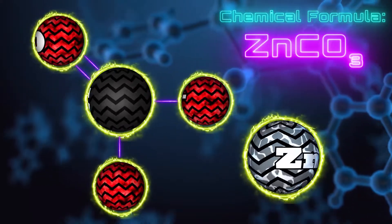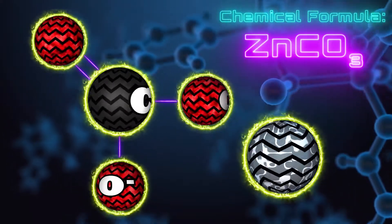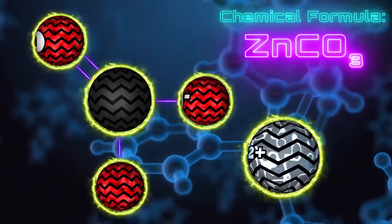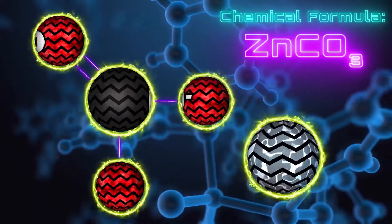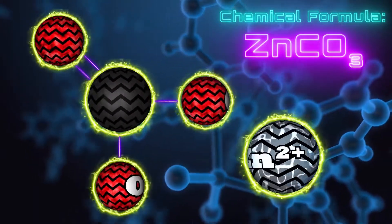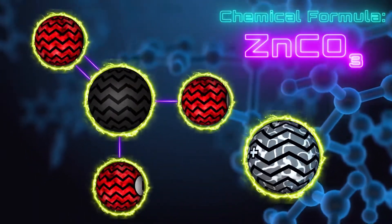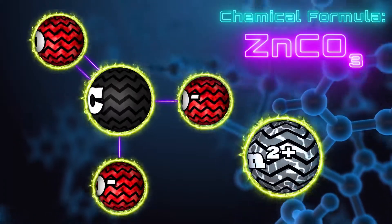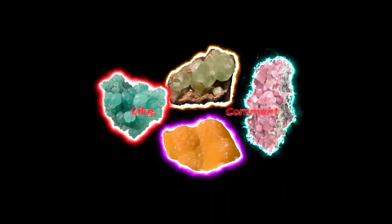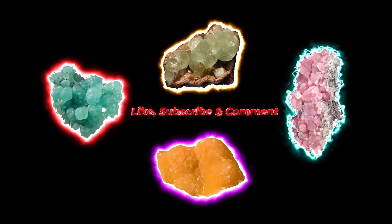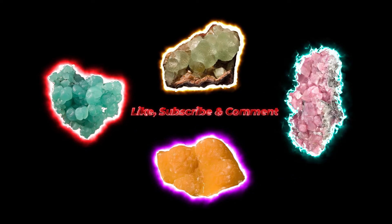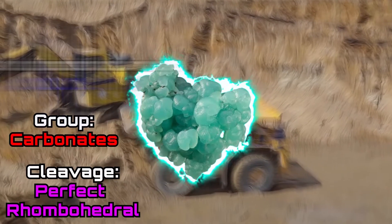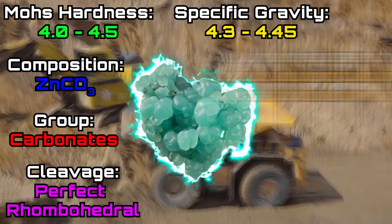Given its structure, smithsonite has a variety of crystal type formations, of which the massive type of habits are the most common in nature. The presence and various configurations of zinc allow it to exist in a wide variety of colors, which include white, gray, yellow, green, purple, pink, and even orange to brown.